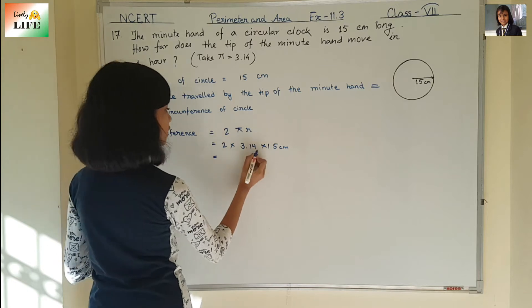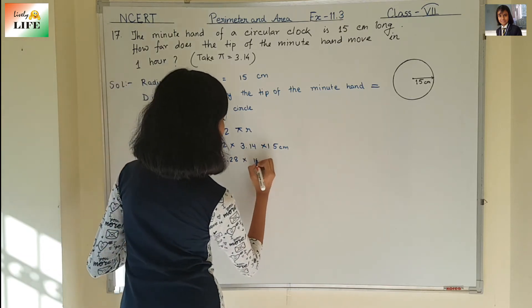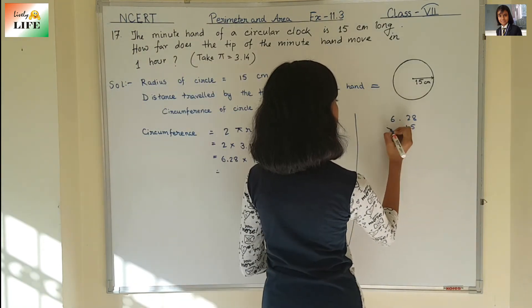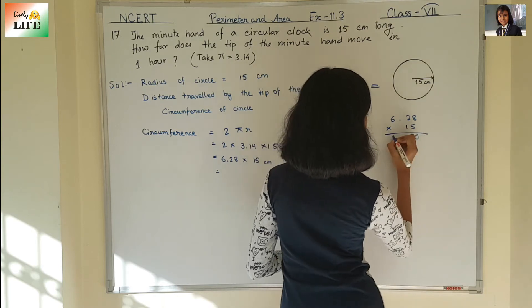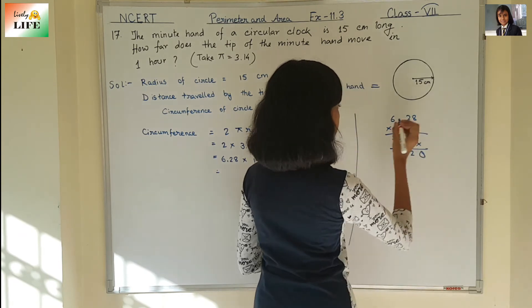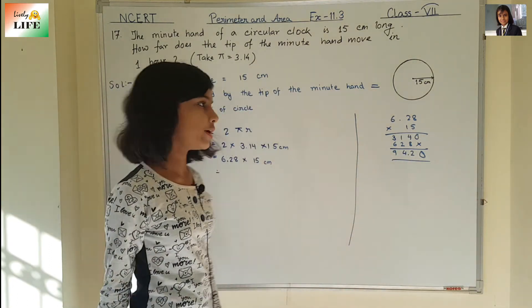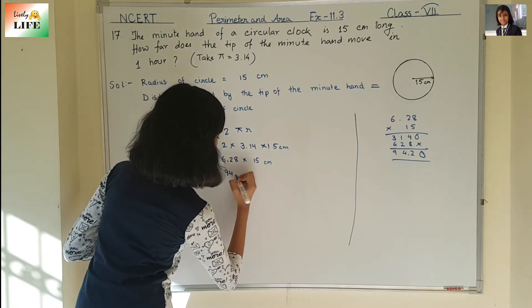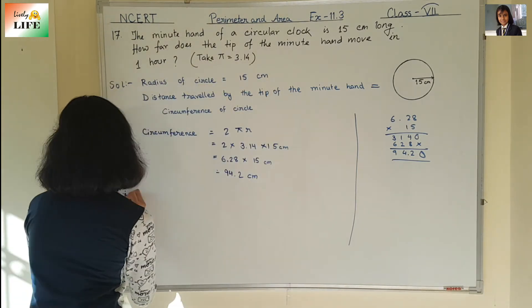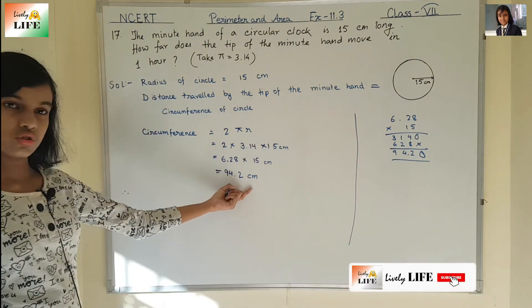2 into 3.14 is 6.28, multiplied by 15 centimeters, which gives 94.2 centimeters. So the circumference is 94.2 centimeters, and therefore the distance travelled by the tip of the minute hand in one hour is also 94.2 centimeters.